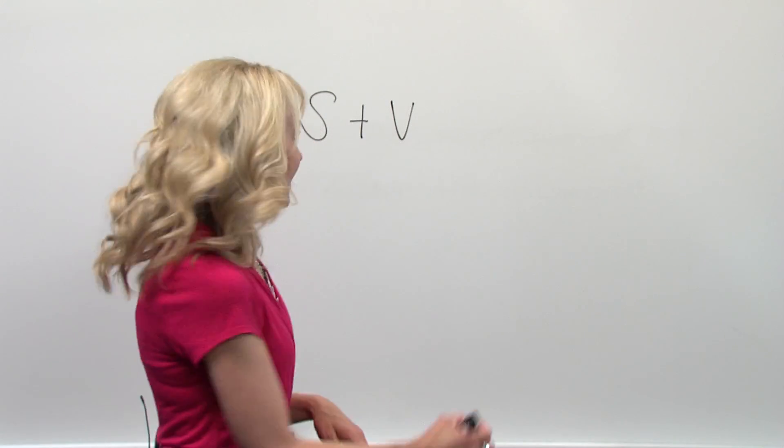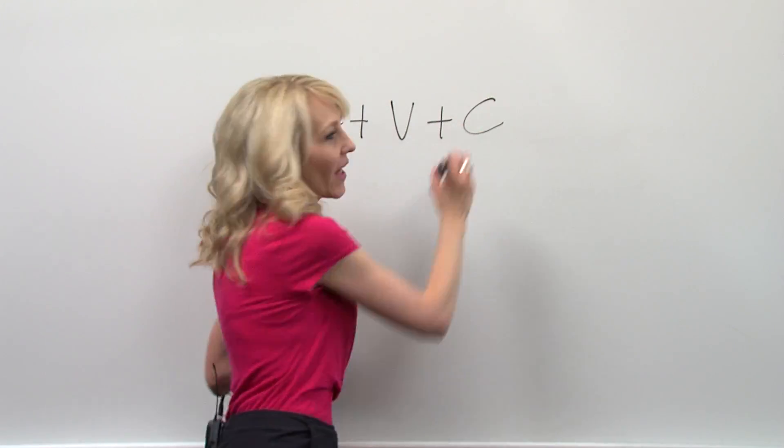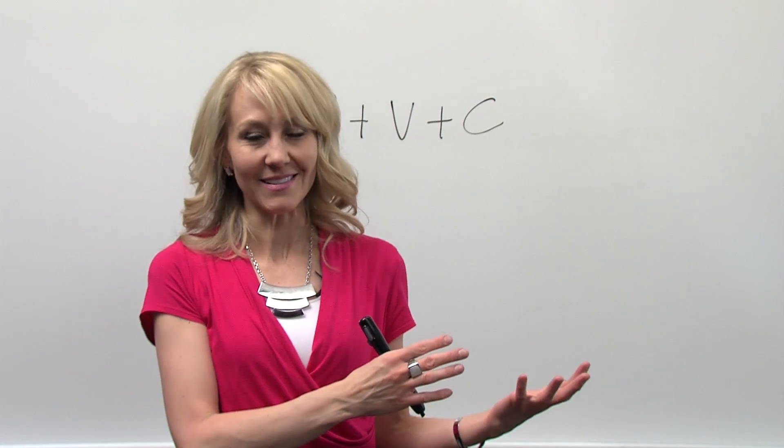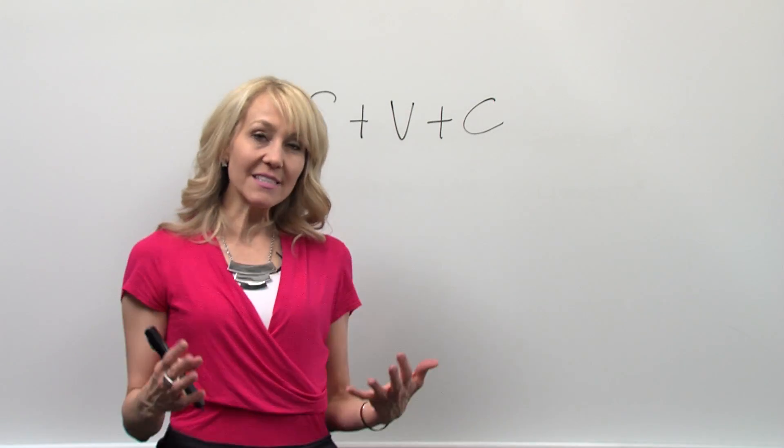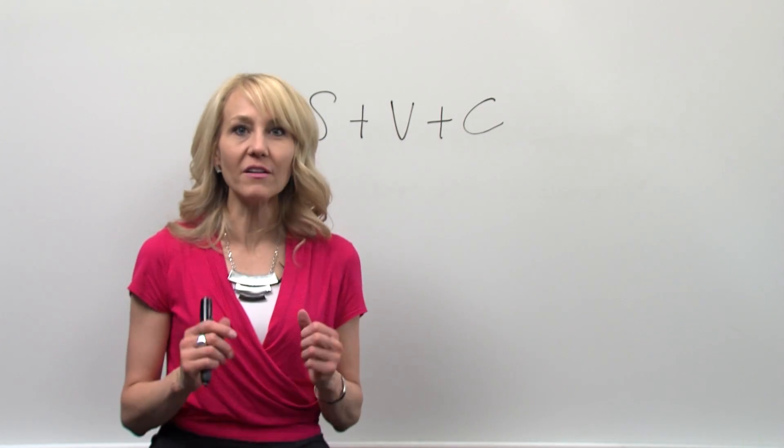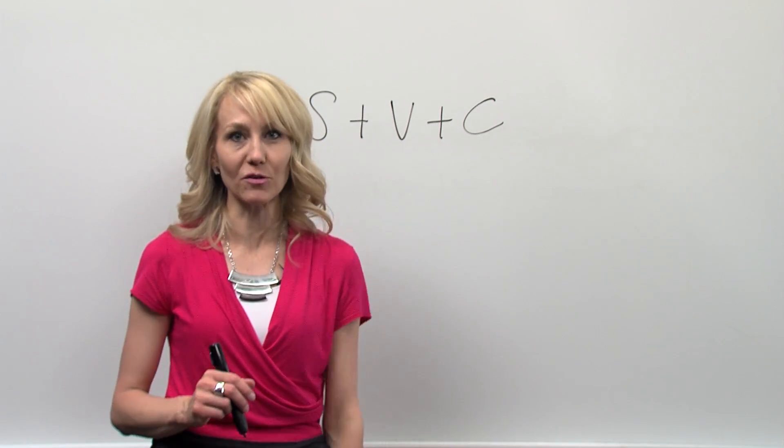And then, to simplify the rest, we're simply going to lump all the other elements into the category we'll call complements. So in other words, our sentences are divided into subject, verb, and complement. All of our rules will fall into one of those three categories.